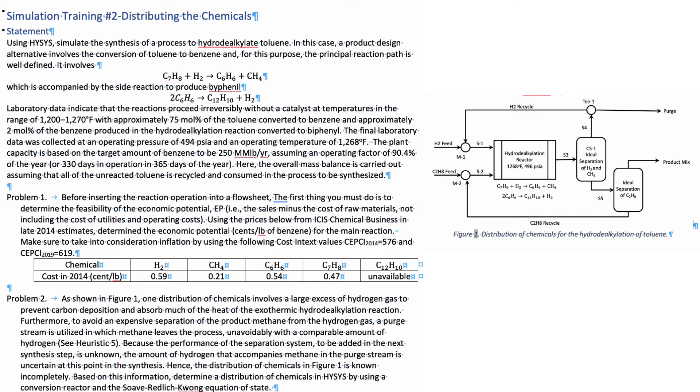Because of the performance of the separation system, to be added in the next synthesis step is unknown. This is something that you typically design, so at this stage it's unknown. To be able to distribute the chemicals, the amount of hydrogen that accompanies methane in the purge stream is uncertain at this point in the synthesis.